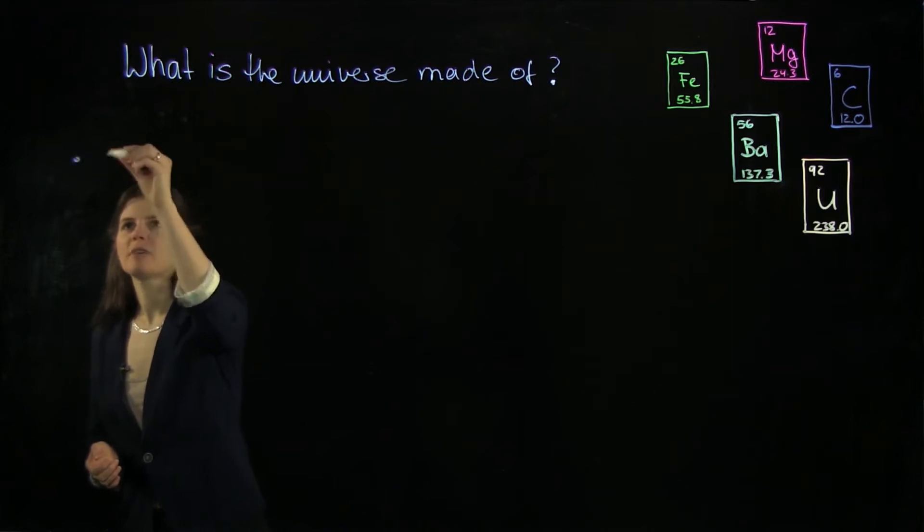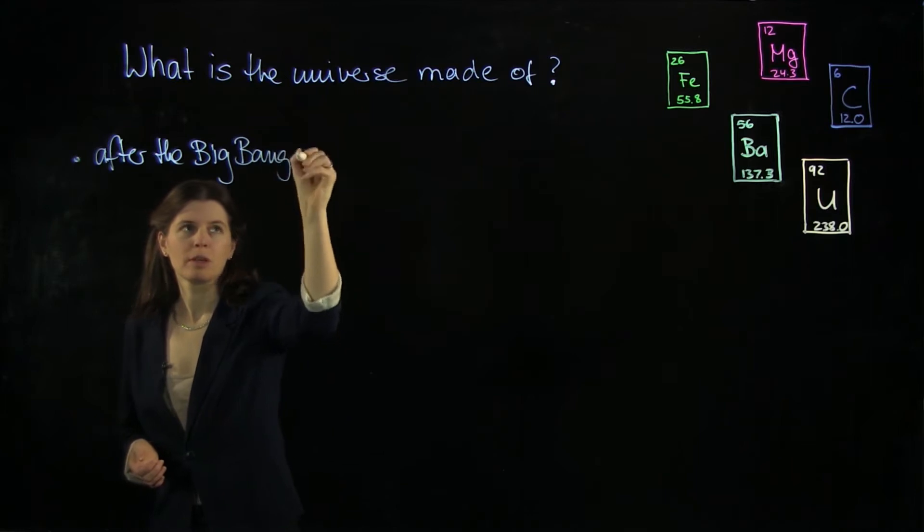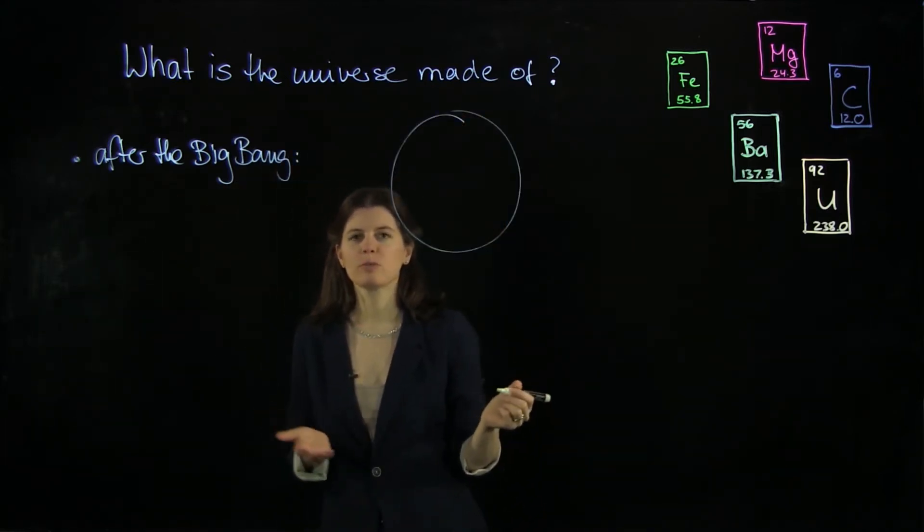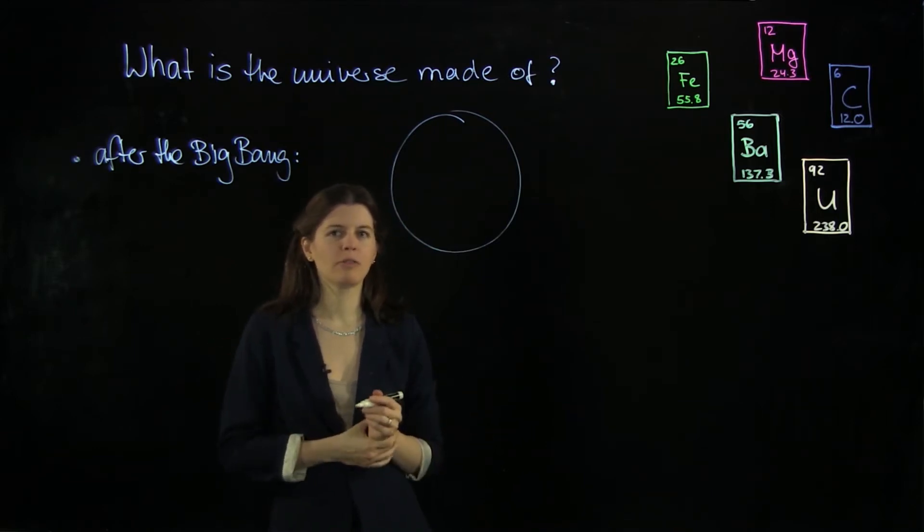First, after the Big Bang. So if we draw a little pie chart here, the universe was made from just hydrogen and helium and tiny little bits of lithium.